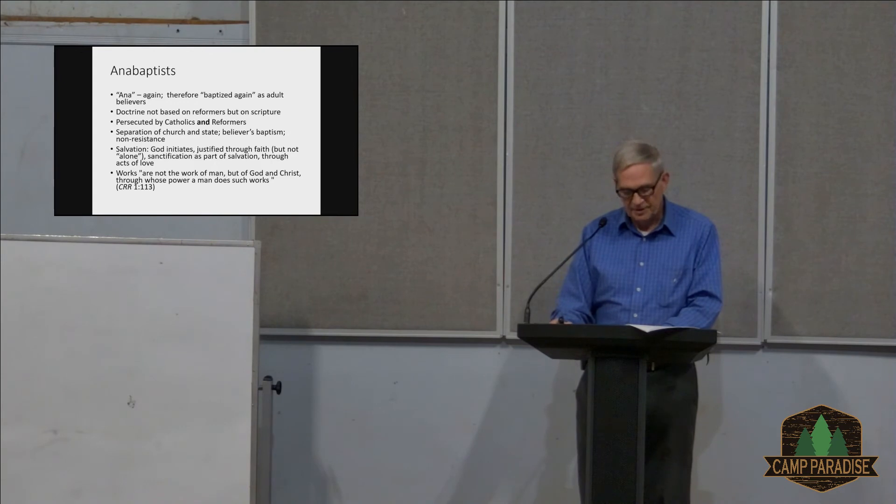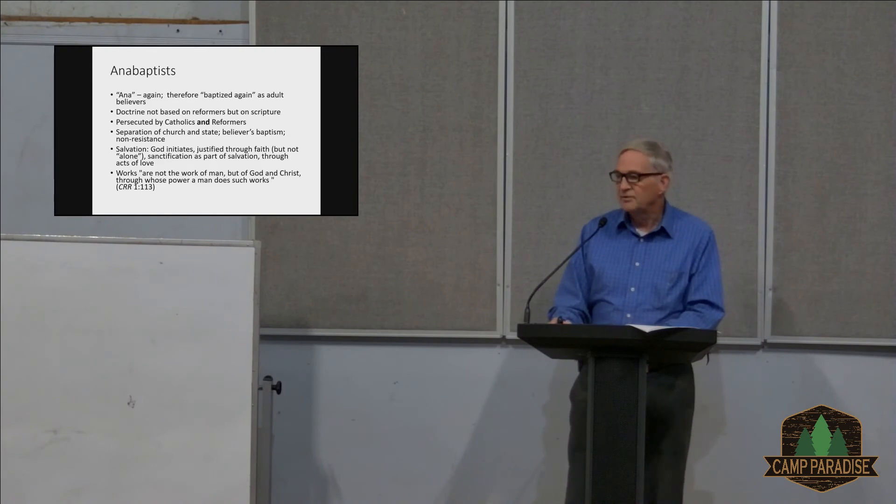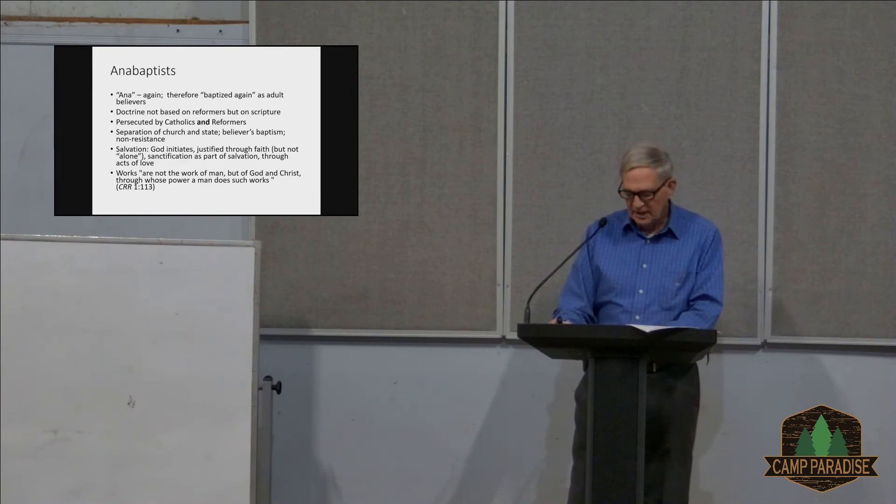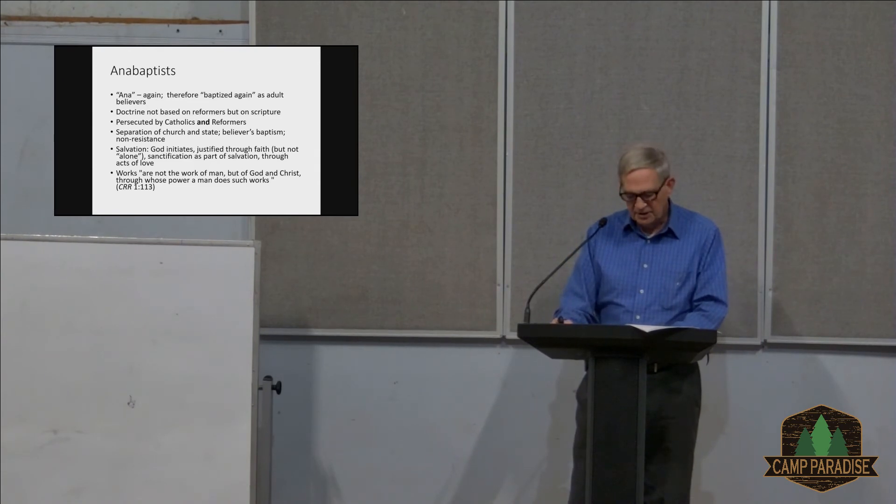Like Catholics, Anabaptists insisted that sanctification, or actually becoming righteous, is the goal of God's saving work. Yet they argued that this occurs not within Catholicism's church framework of sacraments, but primarily through acts of love in daily life. And although human cooperation is involved in the process, most Anabaptists maintain that those works of love that are involved are not the work of man, but of God in Christ, working in the people through whose power a man does such works. It turned out that these Anabaptist ideas were very similar to the views of the early church fathers, those who had experienced the persecutions before 312 A.D., before Constantine became emperor.